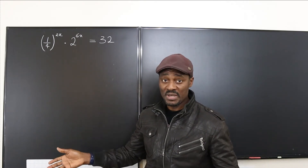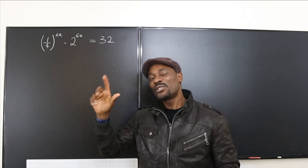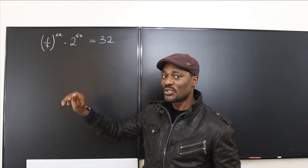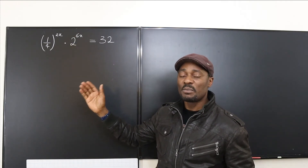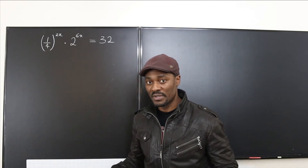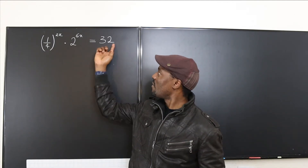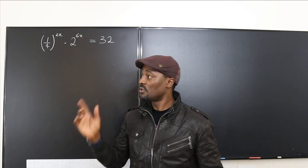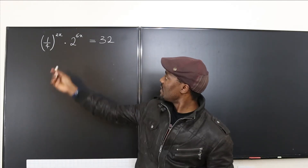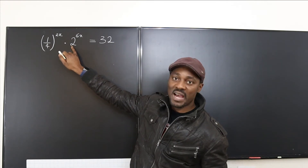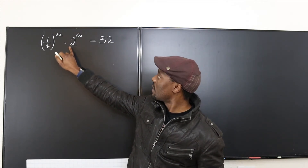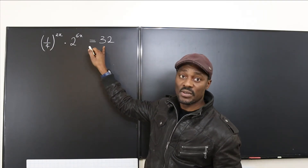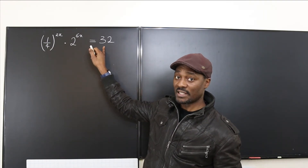This is an exponential equation, which means the variable x is the exponent. When you're not expected to use logarithms to solve it, it means the base of all terms can be expressed as a common base — like 2, 3, or 4. For example, look at this term — it's a prime number, so you can't simplify it further. You want to check whether you can express everything as powers of 2.